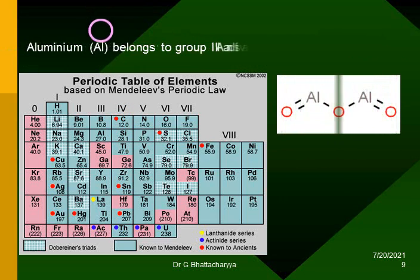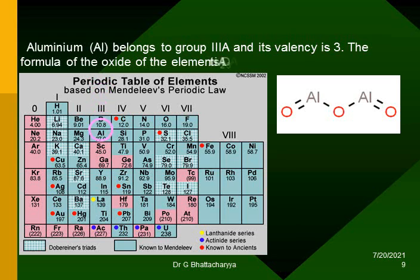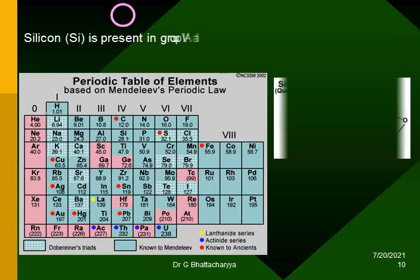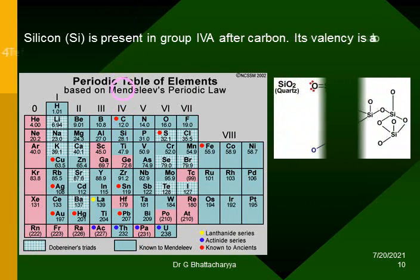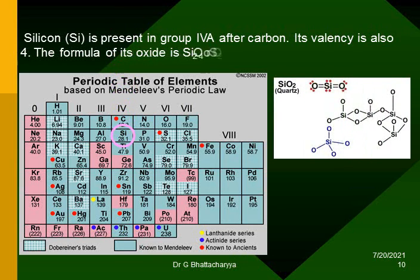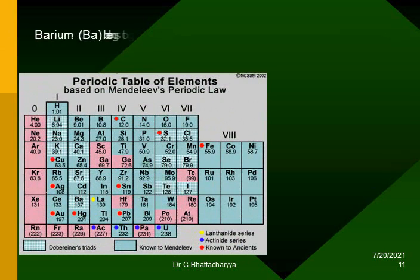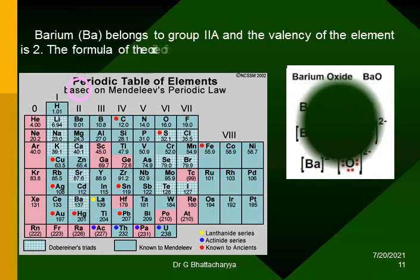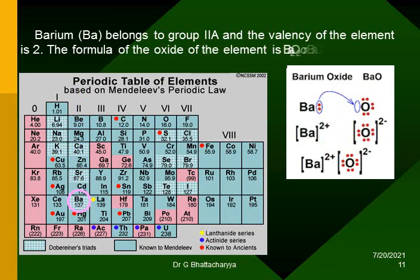Aluminium (Al) belongs to group 3A and its valency is 3. The formula of the oxide of the element is Al₂O₃, aluminium oxide. Silicon (Si) is present in group 4A after carbon. Its valency is also 4. The formula of its oxide is Si₂O₄ or SiO₂, silicon oxide. Barium (Ba) belongs to group 2A and the valency of the element is 2. The formula of the oxide of the element is Ba₂O₂ or BaO, barium oxide.